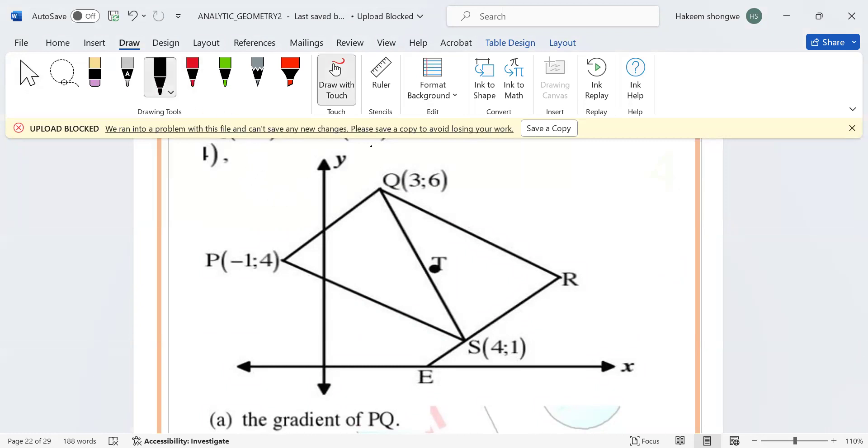So what is the gradient? The gradient, small letter m, equals changing y over changing x. From physics, the gradient is changing y over changing x. Your changing y means y₂ minus y₁. Physics says final minus initial, so it's y₂ minus y₁ divided by x₂ minus x₁.